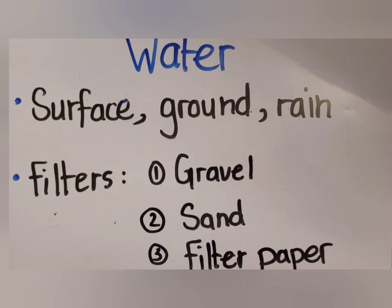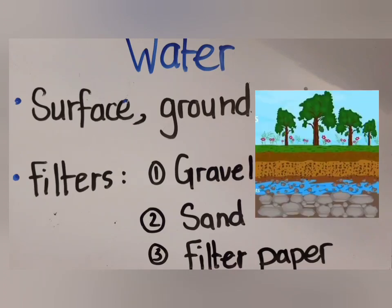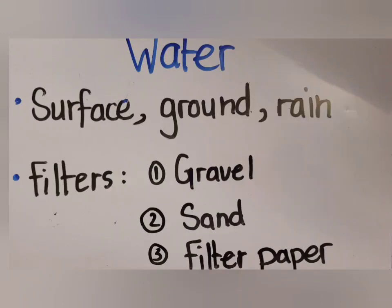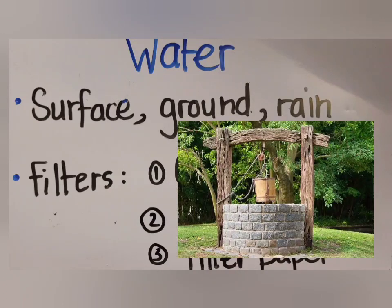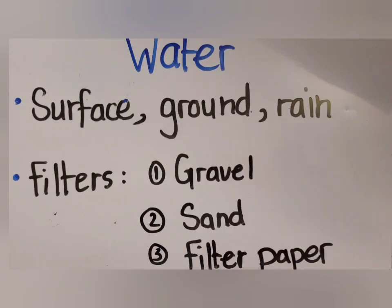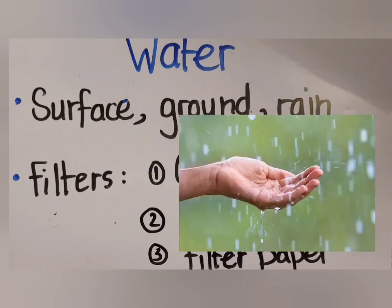Then we have ground water — we can also call it underground water. As the name says, the water is under the ground, so with your eyes you just see land, but the water is actually underneath, and you need to dig to get it. That's why some people use wells to get water from under the ground. Rainwater is simply the rain that falls from the sky.